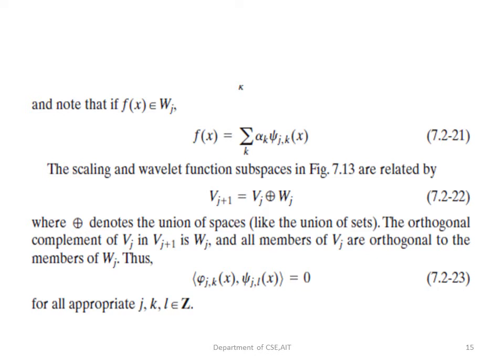If f(x) belongs to W(j), it can be expressed as f(x) = Σ_k α_k ψ(j,k,x). The scaling and wavelet function subspaces are related by V(j+1) = V(j) ∪ W(j), meaning the union of V(j) and W(j) belongs to V(j+1). W(j) is the orthogonal complement of V(j) in V(j+1), so all members of V(j) are orthogonal to members of W(j) — that is, ⟨φ(j,k,x), ψ(j,L,x)⟩ = 0 for all integer j, k, and L.